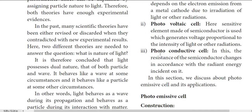The third type is the photoconductive cell. In this cell, the resistance of the semiconductor changes in accordance with the radiant energy incident on it. The change in resistance leads to a change in conductivity — that is, the flow of electrons from cathode to anode changes. This device is called the photoconductive cell.